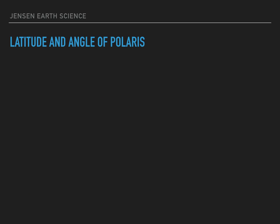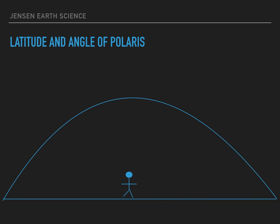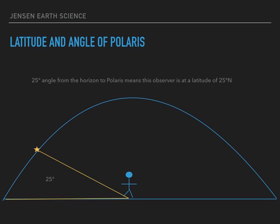Now say I have my observer hanging out at night looking for Polaris. Here's my stick figure, here's the horizon he's standing on, and here is the night sky. Now I can add my Polaris. Here's the angle at which my observer is seeing Polaris — we'll call this angle 25 degrees. If my observer is seeing Polaris at a 25-degree angle, it means that my observer is at a latitude of 25 degrees North.